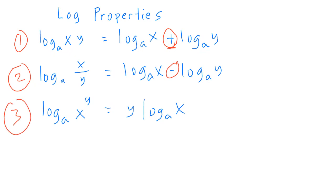The third property is the power property: log with base a of x to the power of y is equal to y times log base a of x. You simply bring the exponent y to the side of the log. It should be placed before the log function, not after. This is the power property or power rule — those are the three major log properties.